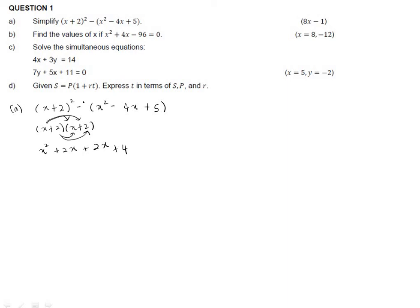For the second part, multiply the minus sign by each term inside the bracket: minus x², then minus times minus gives positive 4x, and negative 5. Now simplify: x² minus x² equals 0, 2x plus 2x equals 4x, 4x plus 4x equals 8x, and 4 minus 5 equals negative 1. Final answer: 8x minus 1.